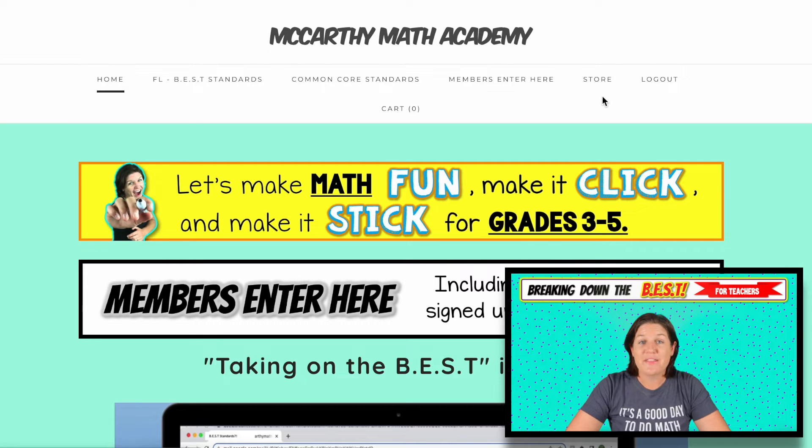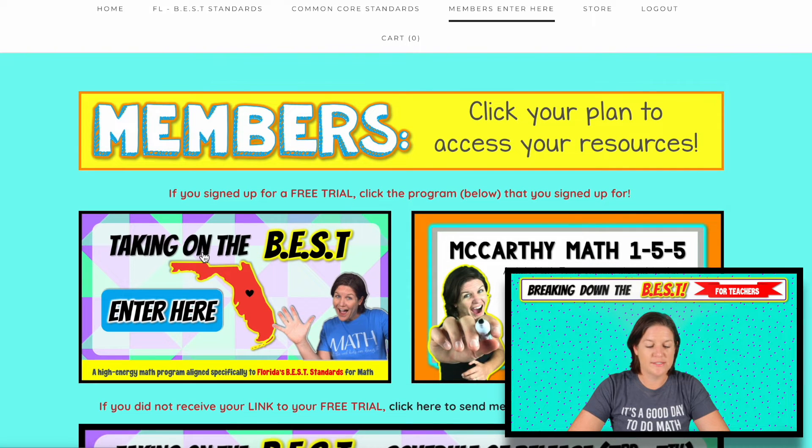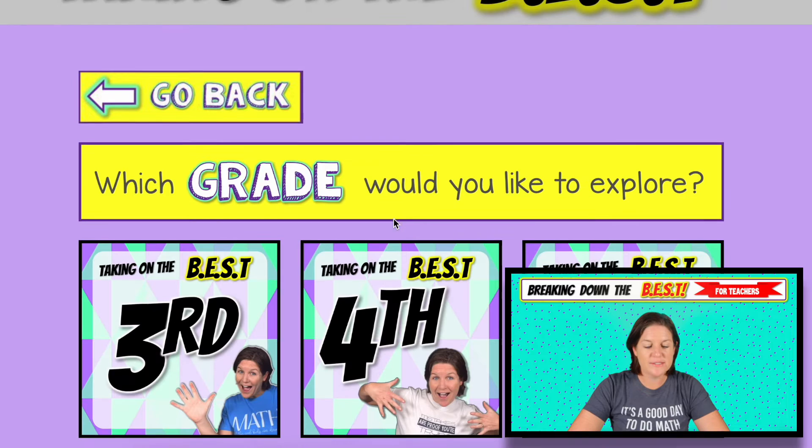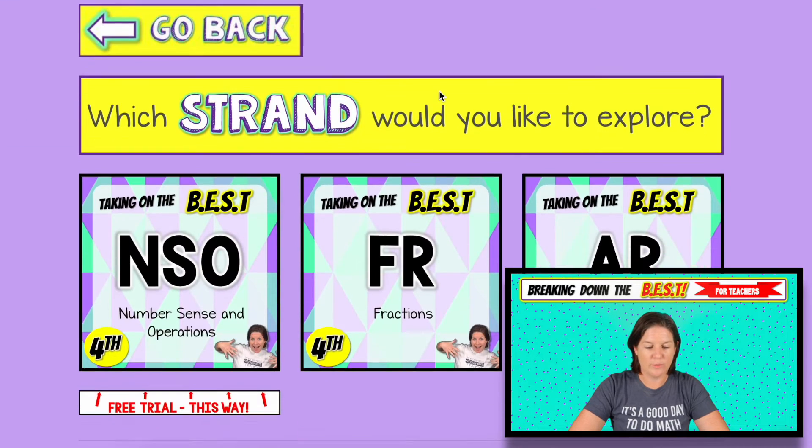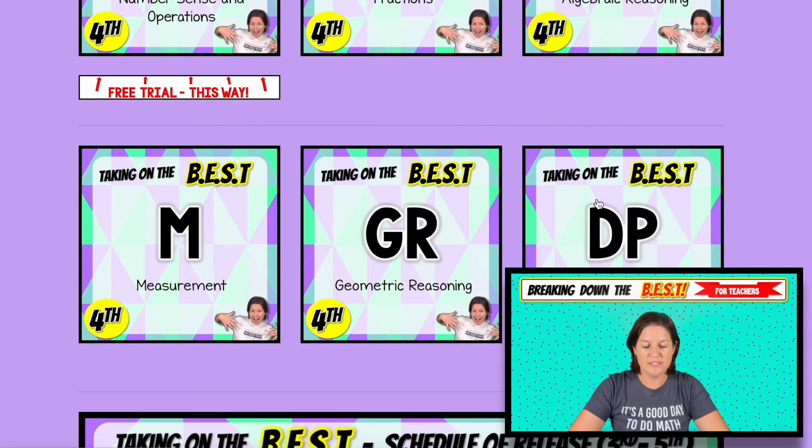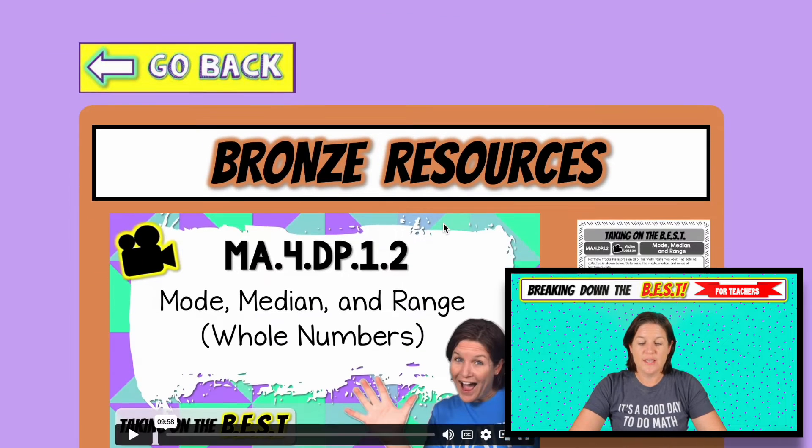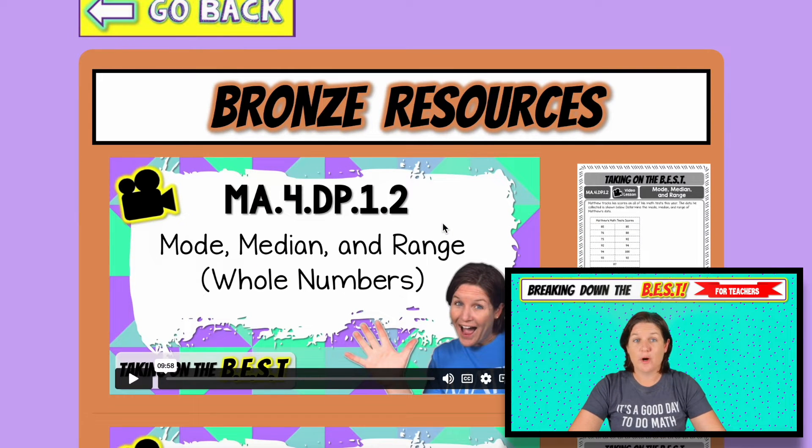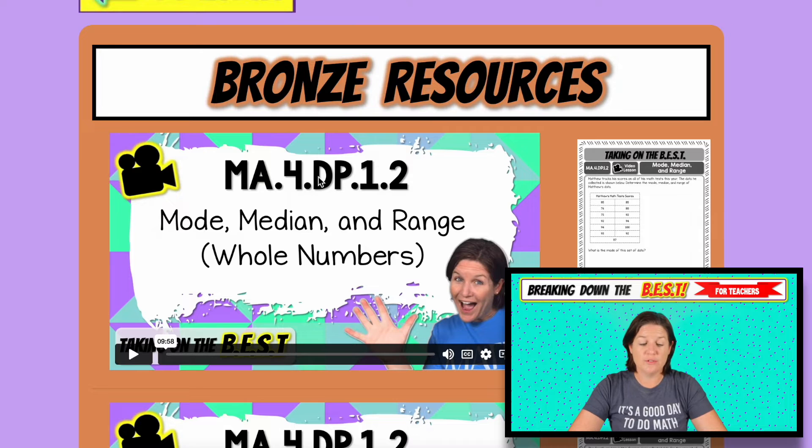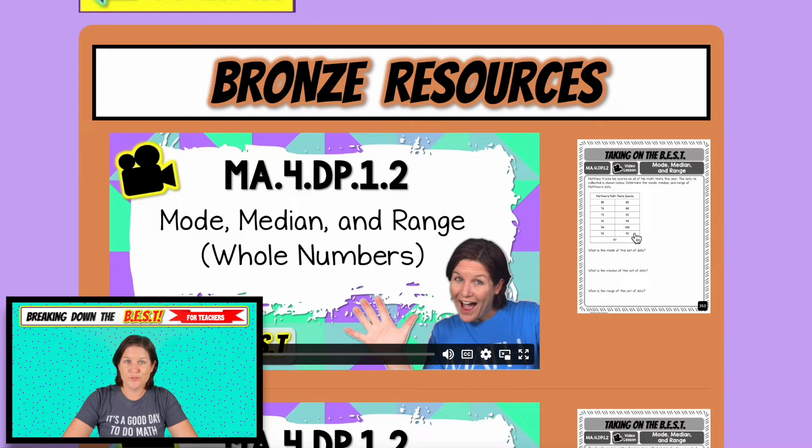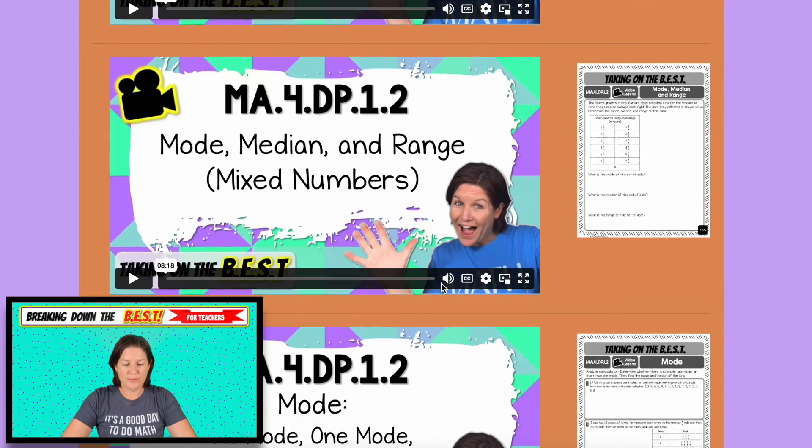So here we are on the website, McCarthyMathAcademy.com. We're going to click the tab right here that says Members Enter Here and select Taking on the Best. We're in fourth grade right now. We're going to scroll down to the DP strand. And we are right here, MA.4.DP.1.2, which is finding the mode, the median, and the range in the data set. The first page that opens up are your bronze resources, which include the video lessons and the printable student notes.